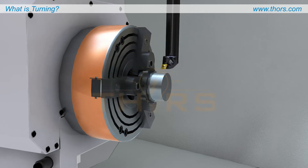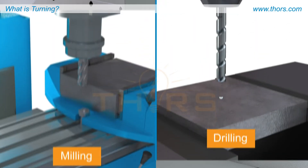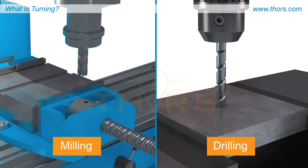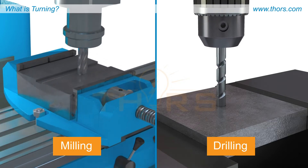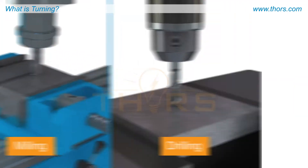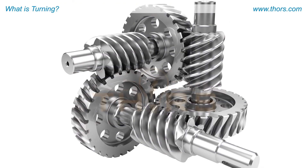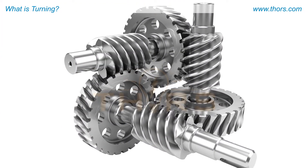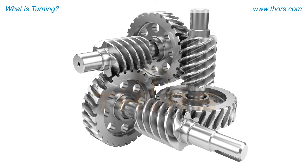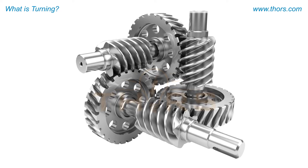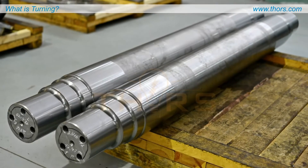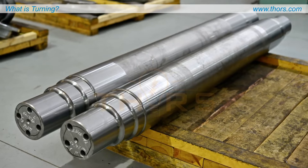In contrast to this, other machining operations such as milling and drilling remove metal while the workpiece is fixed and the tool rotates. Modern-day turning is capable of creating many different parts such as the gears and shafts used in automotive industries and heavy-duty propeller shafts.